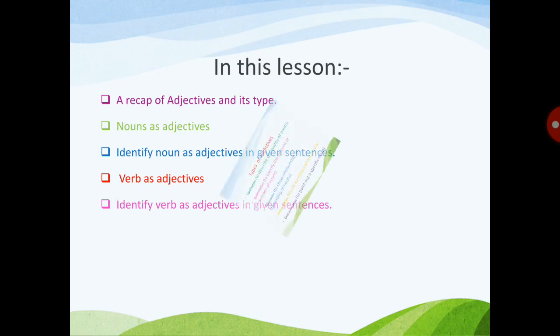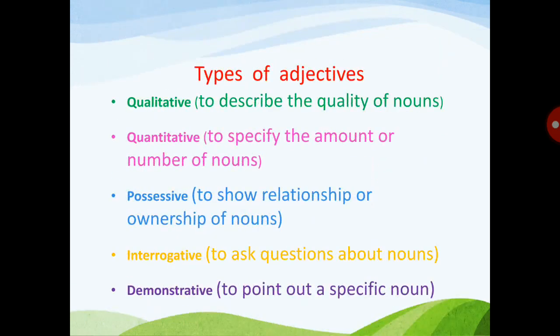Let's take a recap of what we covered last week about the types of adjectives — their uses and definitions. First, qualitative adjective: we use qualitative adjectives to describe the quality of nouns. Second, quantitative adjective: quantitative adjectives are used to specify the amount or number of nouns.